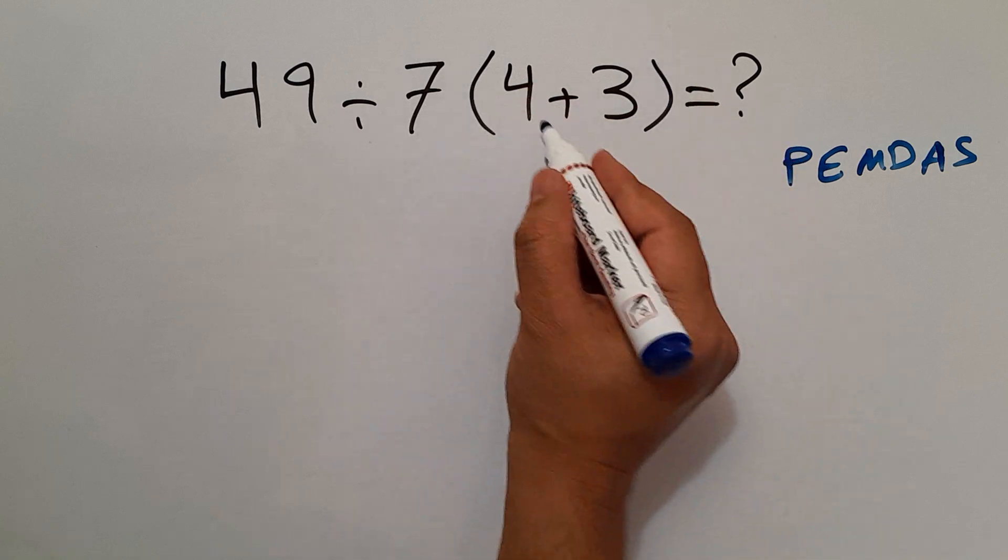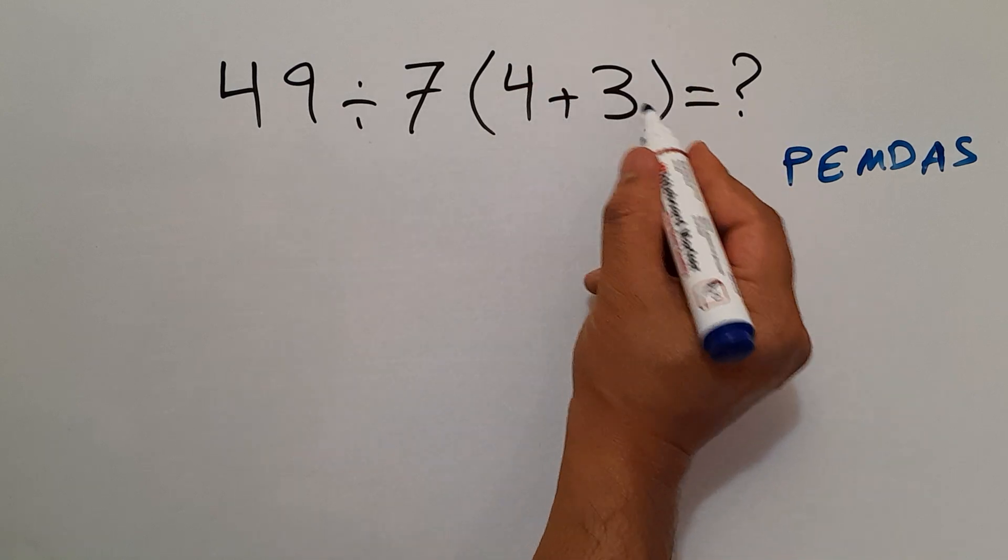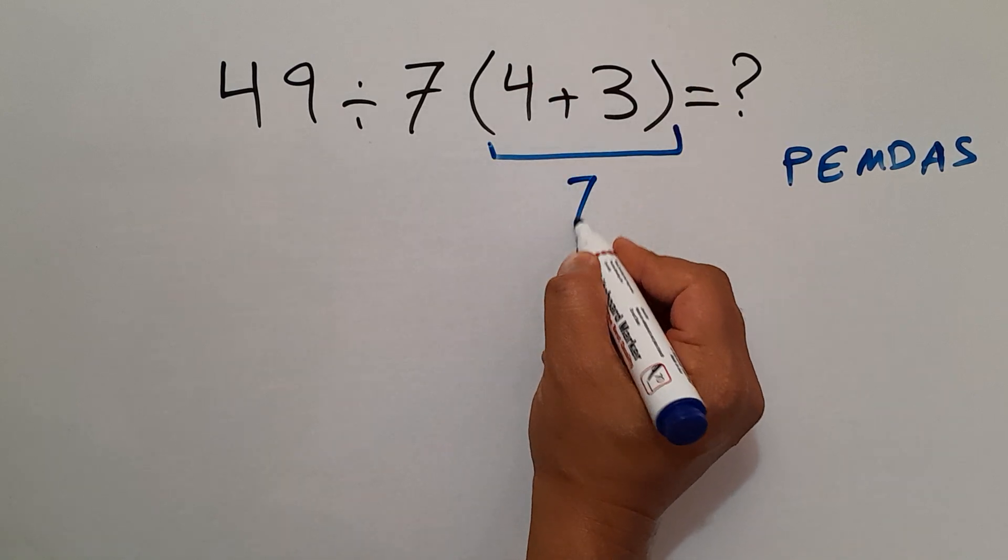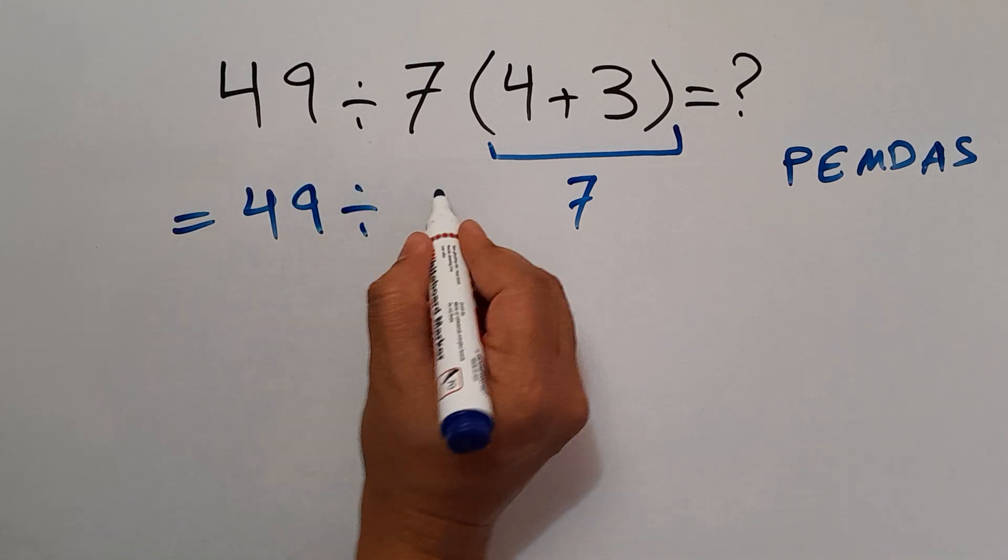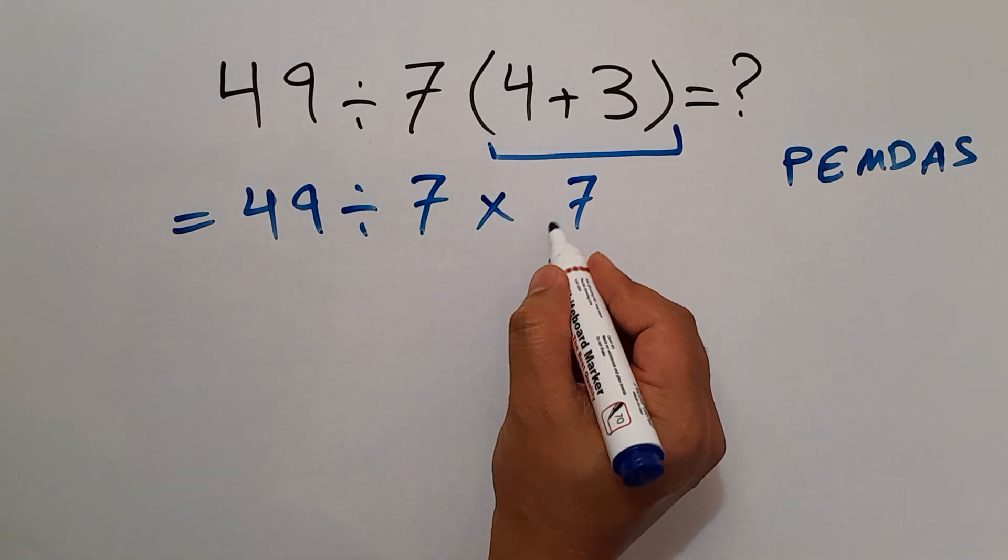So here first we do these parentheses. 4 plus 3 gives us 7. So we have 49 divided by 7, then times 7.